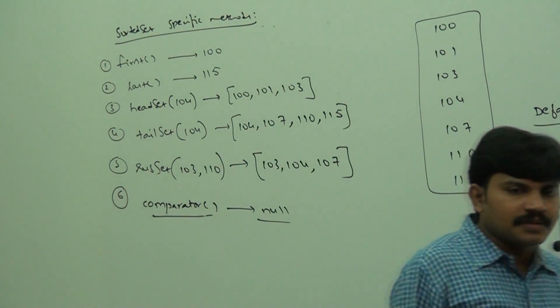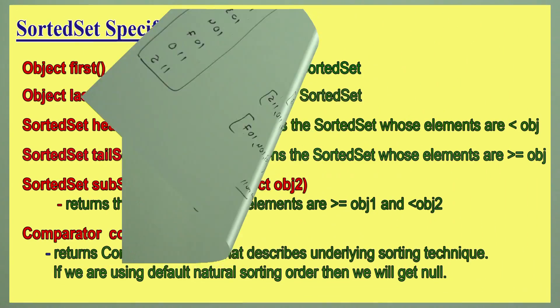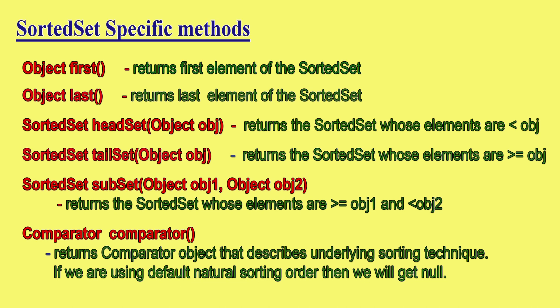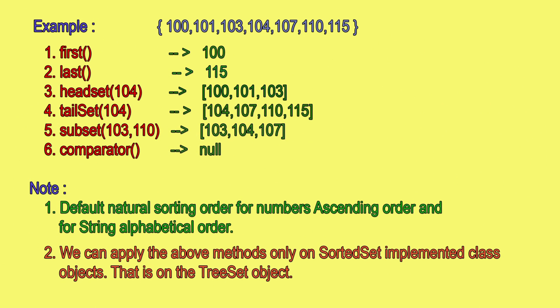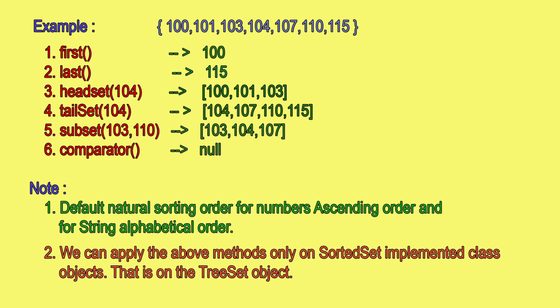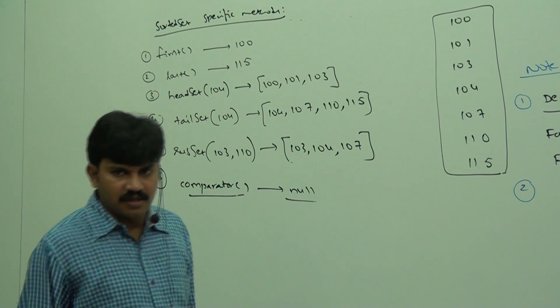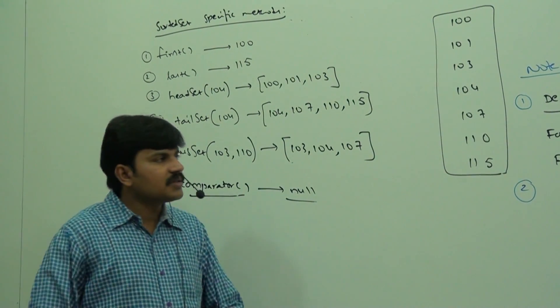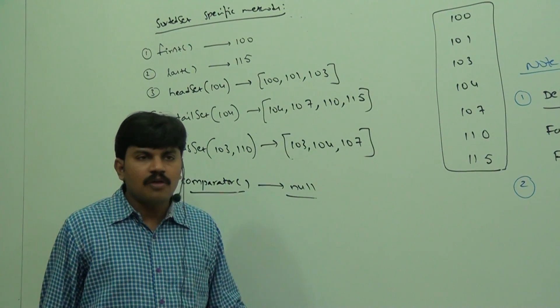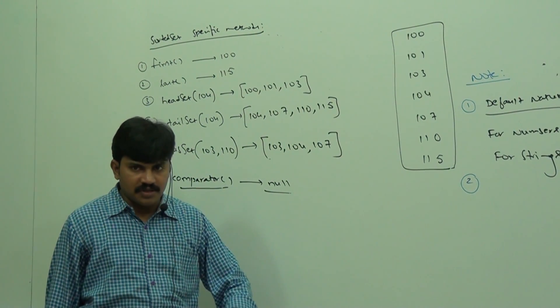So to summarize: a normal Set doesn't contain any new methods, but SortedSet contains these specific methods. Now we will talk about the implementation class for SortedSet, which is TreeSet.